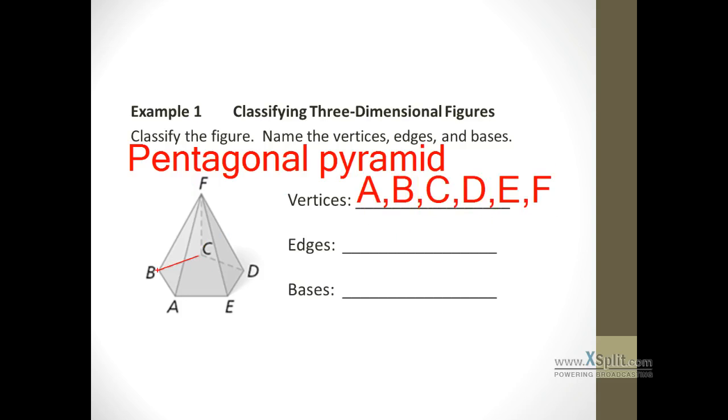Edges, I count 1, 2, 3, 4, and 5 on the base. But there's also an additional 1, 2, 3, 4, and 5 connecting the base up to the top vertex. So there are a total of 10 edges. We'll just name a couple of them, like A, B, going from A to B would be an edge. Going from F to E would be an edge. In addition, there's a total of 10, so there's 8 more of those.